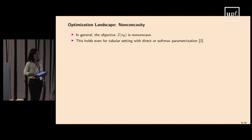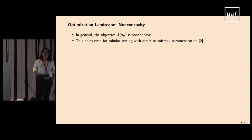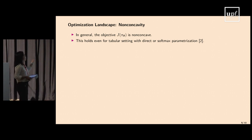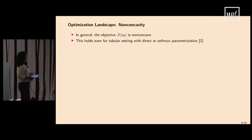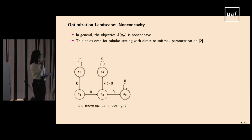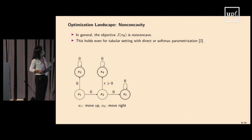Once we have this parameterization, we ask: what does the optimization landscape look like? In general, the objective J(π_θ) as a function of θ is not concave — it is non-concave even in the simplest settings with direct or softmax parameterization. To illustrate, consider an MDP with five states S1–S5 and two actions A1 (move up) and A2 (move right). There are three terminating states S3, S4, S5. The only non-negative reward R is obtained by transitioning from S2 to S4.